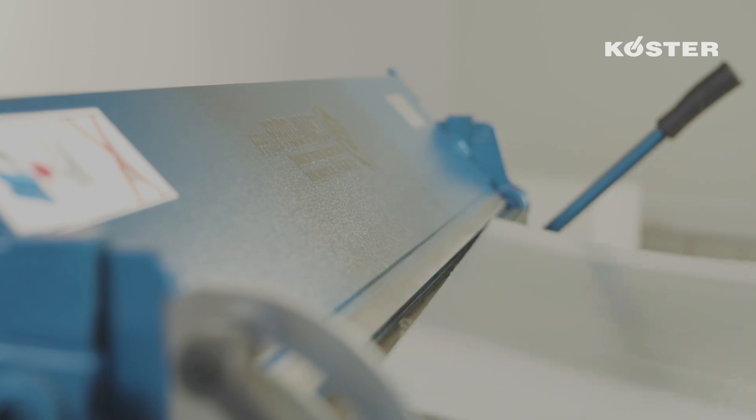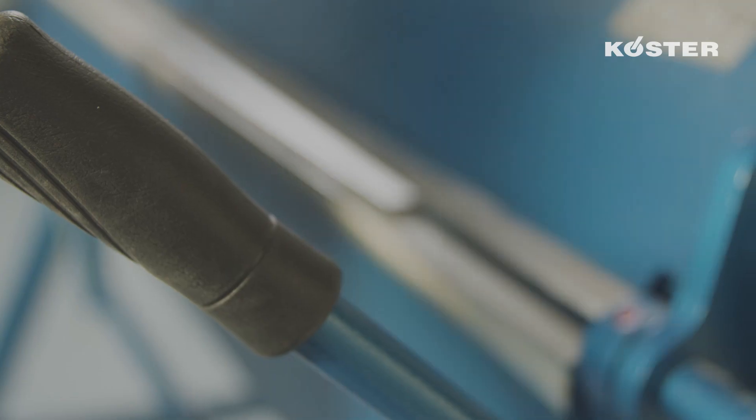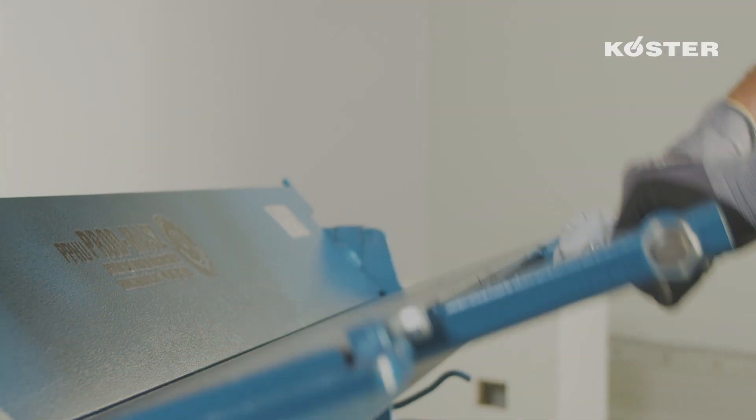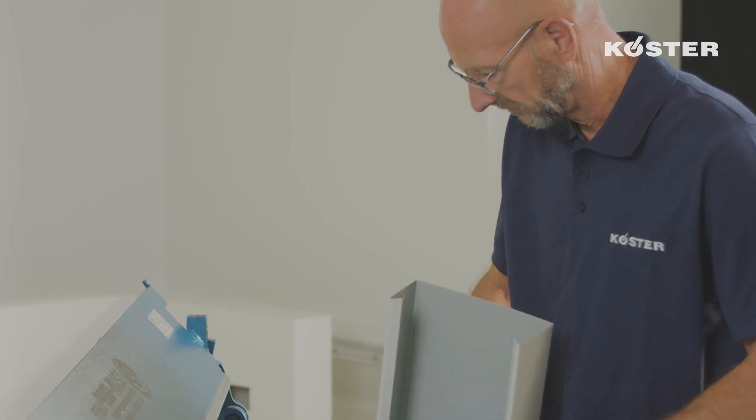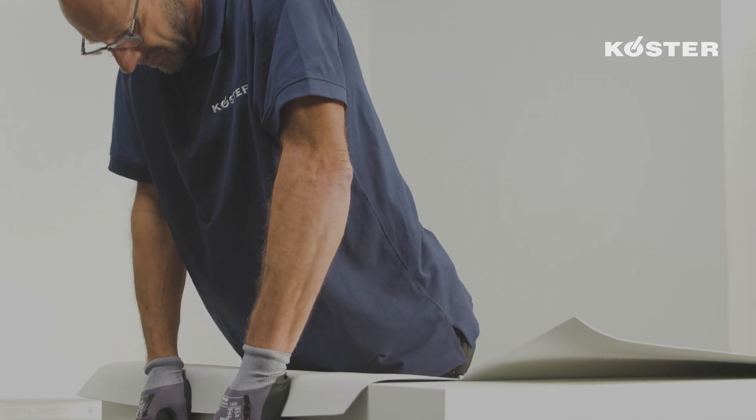TPO laminated metal sheets are available in 2x1 meter sheets or as 30 meter coils and are used for flashing details. The sheets are cut to the desired width and formed using a sheet bending machine. The waterproofing edge is always on the outside of the building.